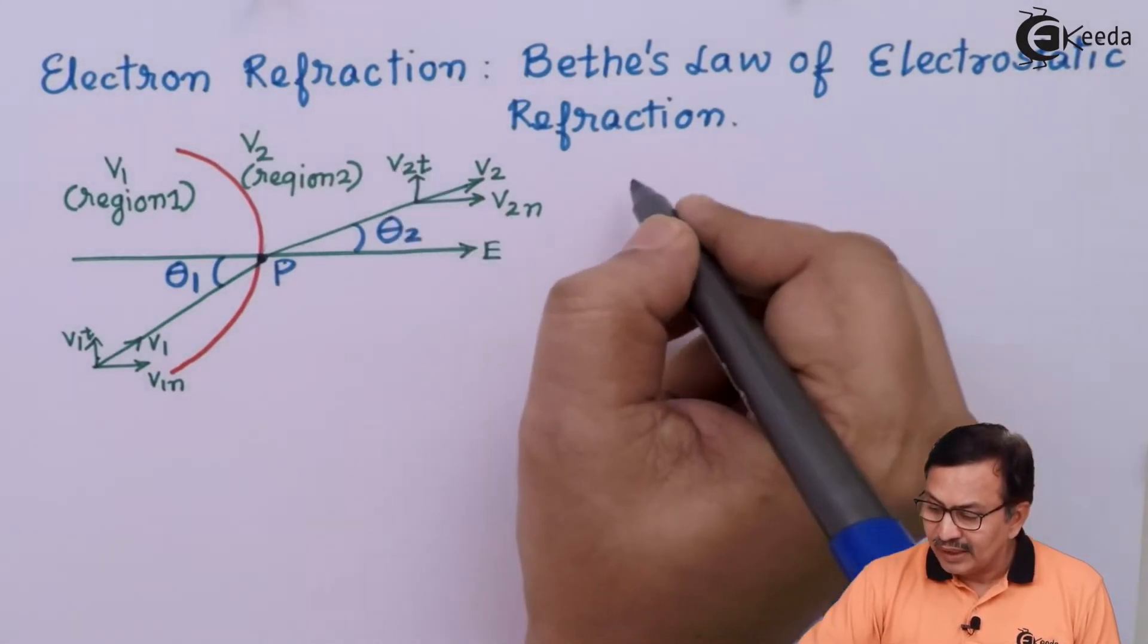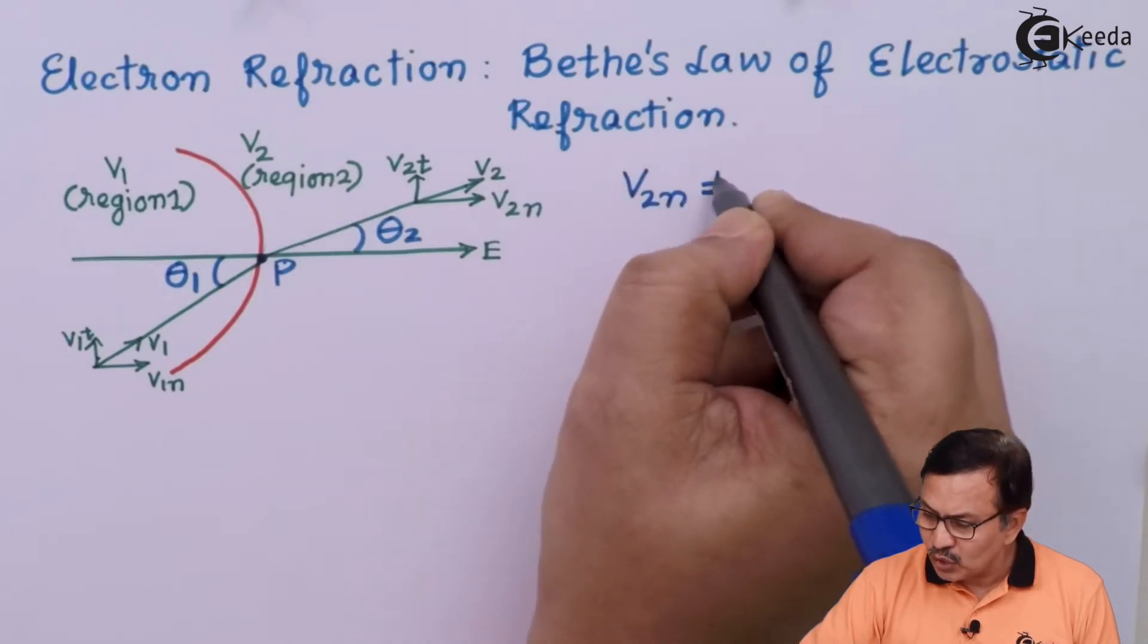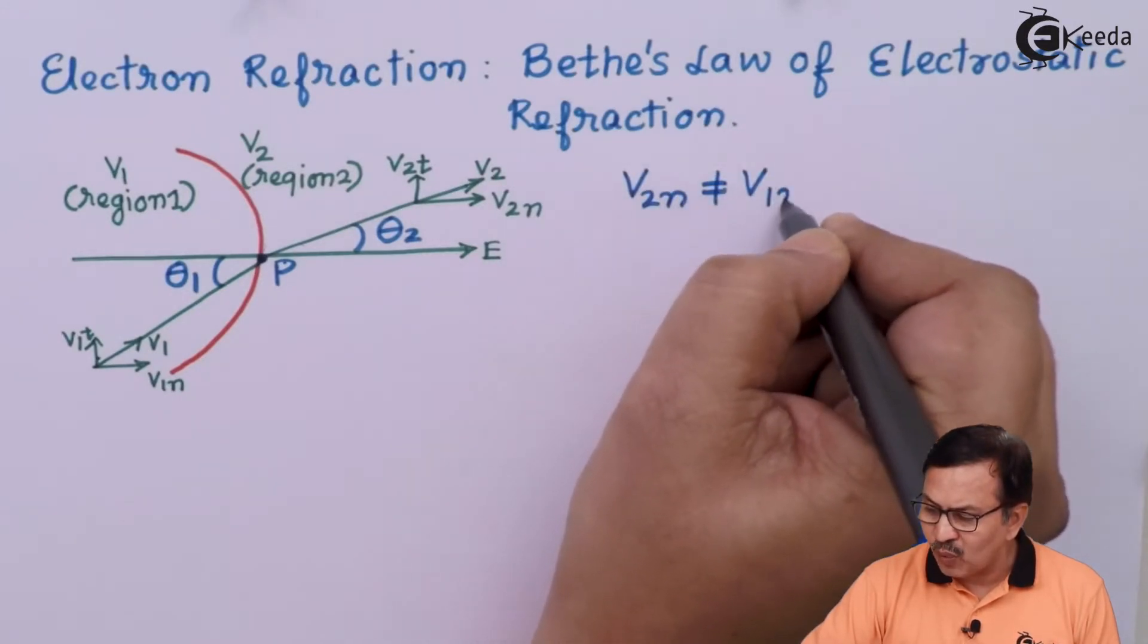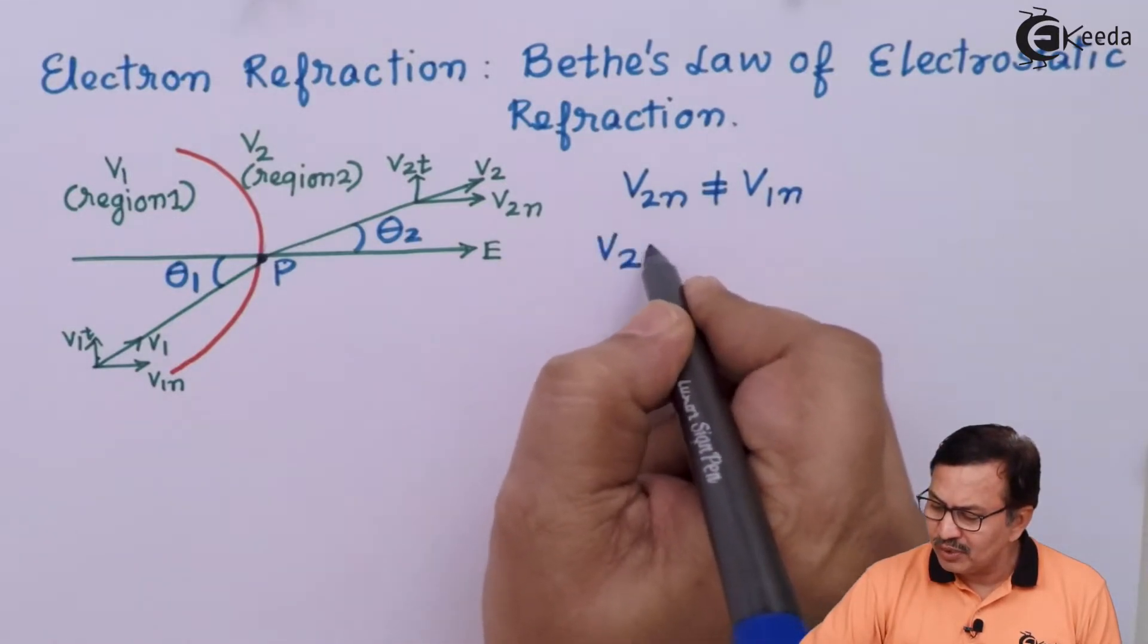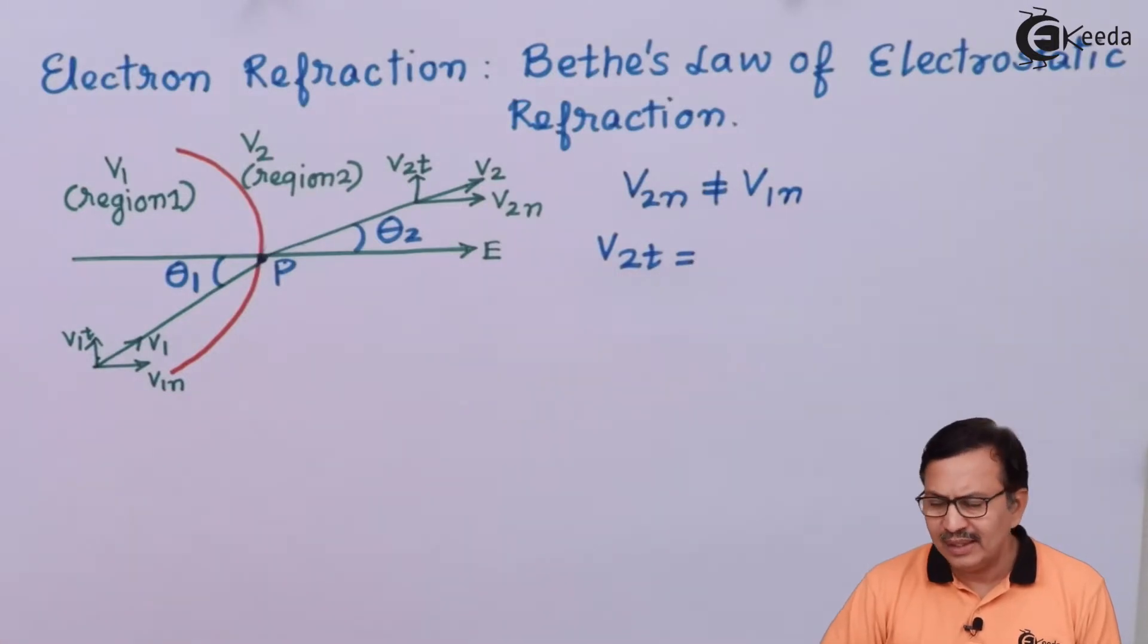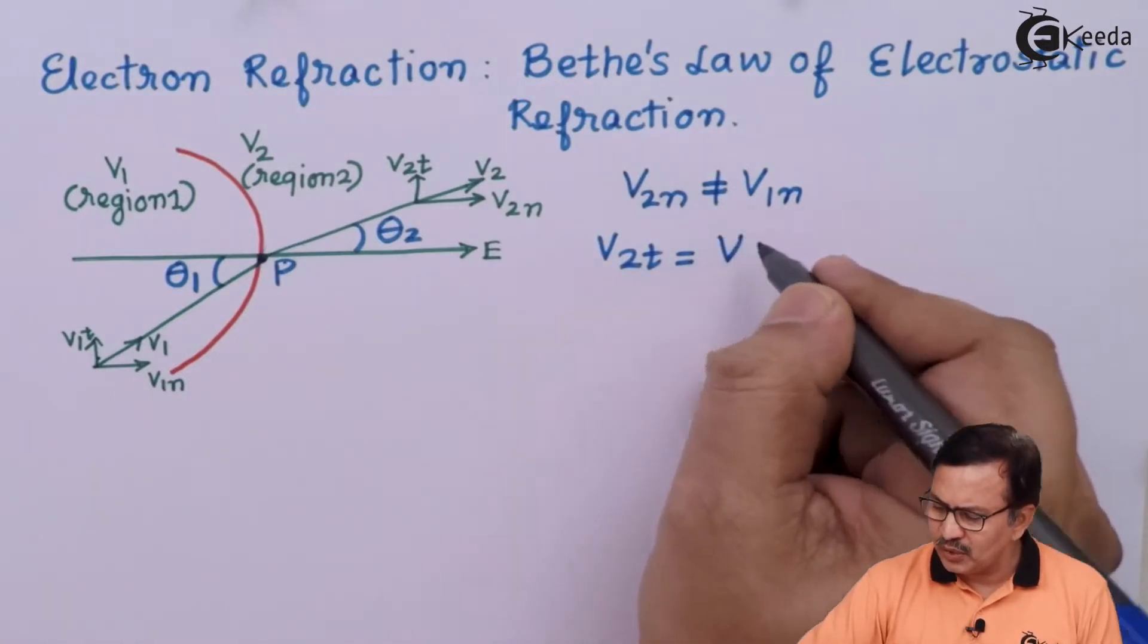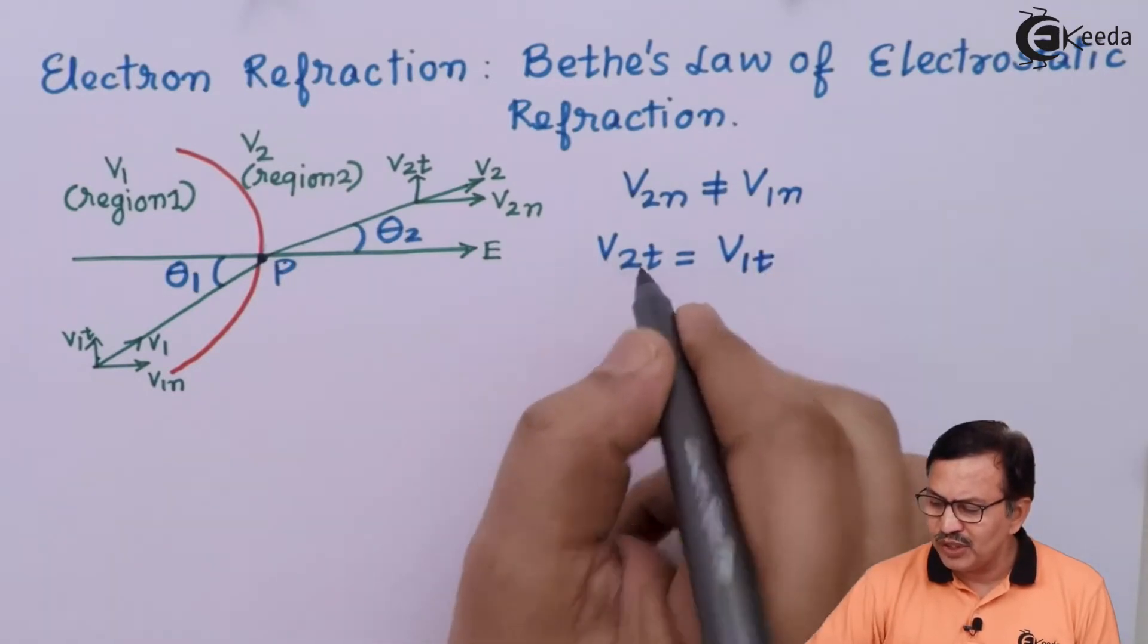Simultaneously, one can say that V2n is not equal to V1n. However, the tangential components V2t, since there is no force acting in that direction, is actually equal to V1t.